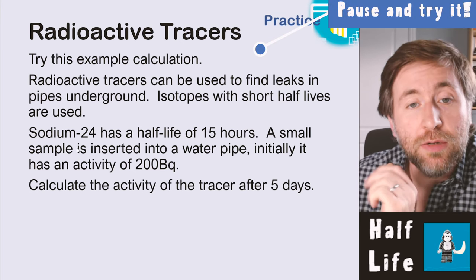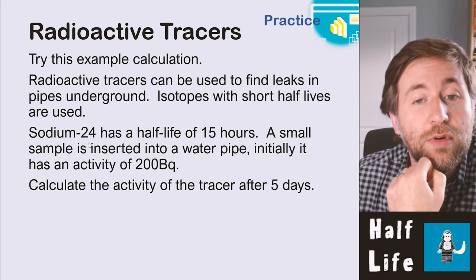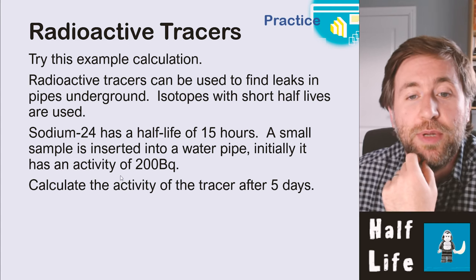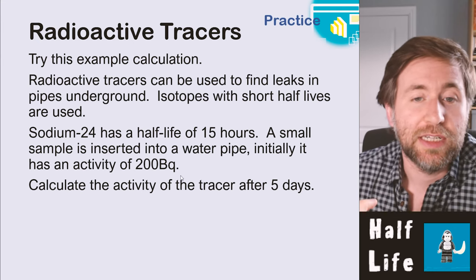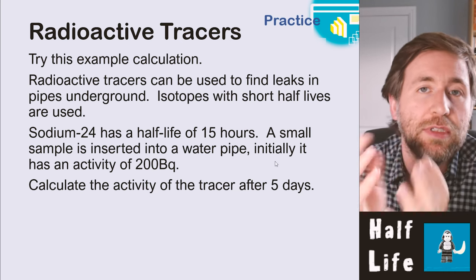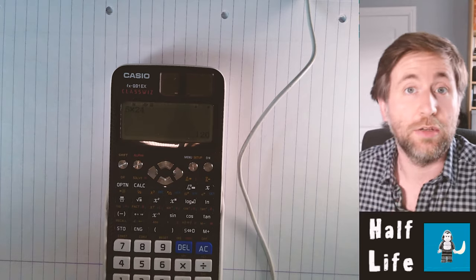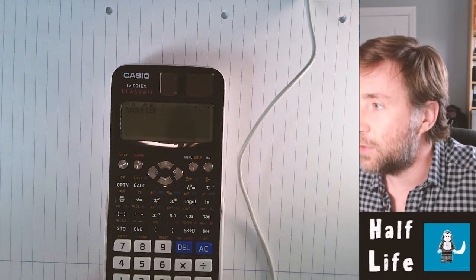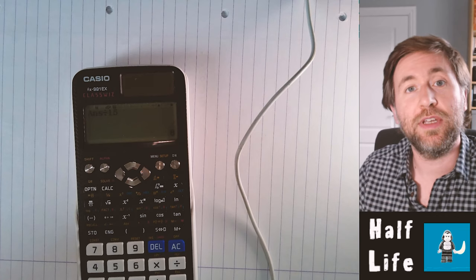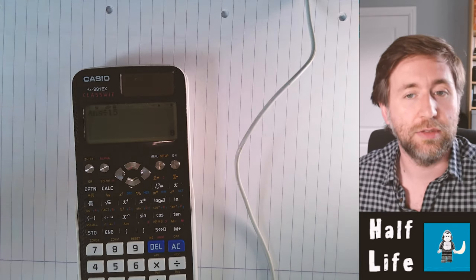Here's an example calculation. Radioactive tracers with short half-lives can be used to find leaks in pipes. Sodium-24 has a half-life of 15 hours; a small sample is inserted into a water pipe with an initial activity of 200 becquerels. Calculate the activity after five days. First, work out how many half-lives have passed: five days is 120 hours, divided by 15 gives eight half-lives.